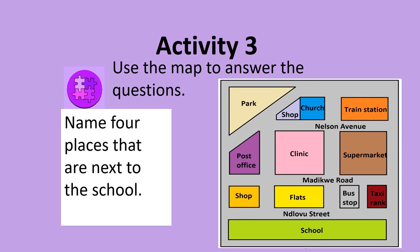Activity 3. Name four places that are next to the school. Do this now. Are you ready? Can you see that the shops, the flats, the bus stop, and the taxi rank are next to the school?